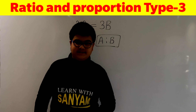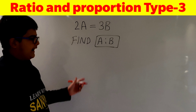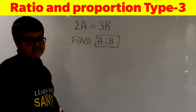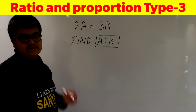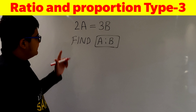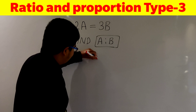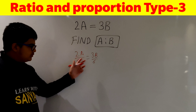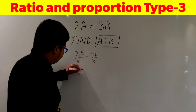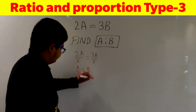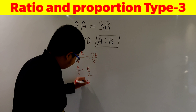Now let's discuss type 3 questions. For example, we are given 2A = 3B and we have to find A:B. The first step is to find the product of all the coefficients: 2 × 3 = 6. We divide both sides by 6, giving us 2A/6 = 3B/6, which simplifies to A/3 = B/2. From here, A:B = 3:2.